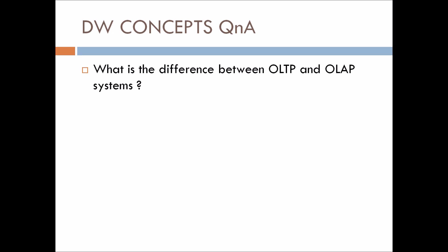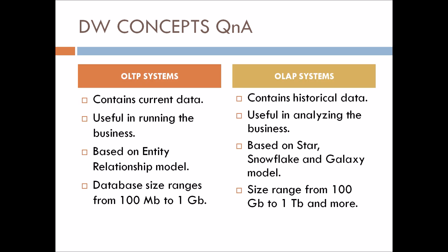Let's have the answer now. So OLTP systems contain current data — current data meaning you can have up to one or two months of data — whereas OLAP systems contain historical data. This is the main difference.